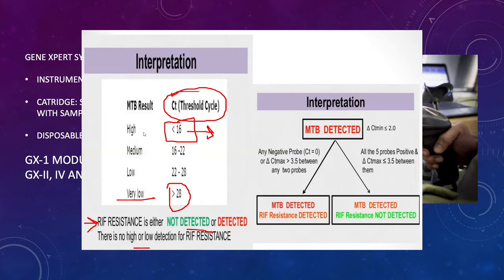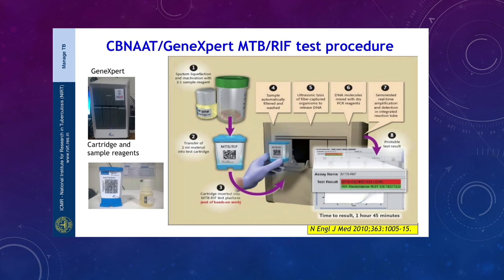The system consists of the module, the machine, and the cartridge. There is a reagent mixed in a 2:1 ratio into the sputum or body fluid sample. It is then entered into the cartridge. Once the cartridge is inserted, all the cleaning, filtering, washing, and processing is done inside the machine — so there is no exposure of the healthcare worker. Inside the machine, it lyses the DNA, captures it, amplifies it using semi-nested real-time PCR, and detects results visible on the computer screen, showing whether MTB is detected or not detected, and rifampicin detected or not detected.